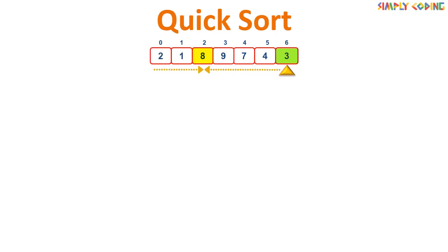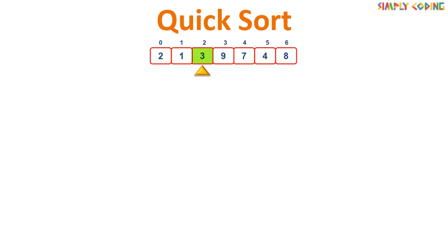We continue this until i and j meet, which is at 8. At this point we have found the position in the array where 3 should be placed in the sorted array, so we swap 8 and 3. Now 3 is in its sorted position. The program then partitions the array into left and right sub-arrays and starts the sort process on them recursively.